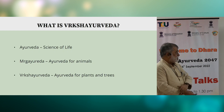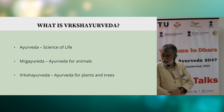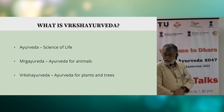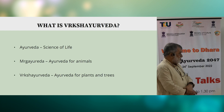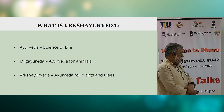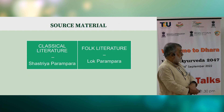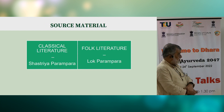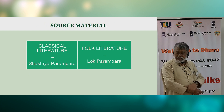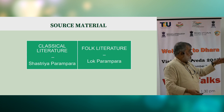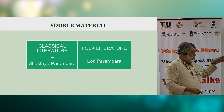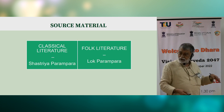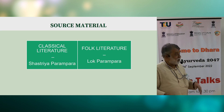Ayurveda, as we all know, is a science of life. Mrigayurveda is Ayurveda for animals. Similarly, there is an entire corpus of knowledge and wisdom called Vrikshayurveda, which is Ayurveda for plants and trees. Like in Ayurveda itself, we have a Shastri Parampara, which is classical literature, and Lok Parampara, which is folk literature.